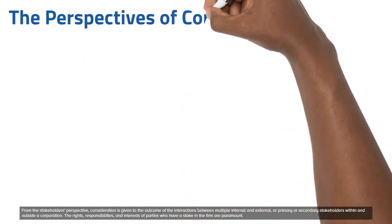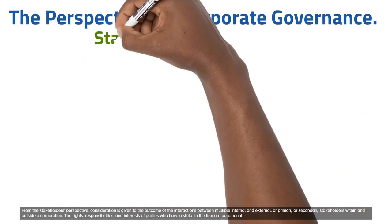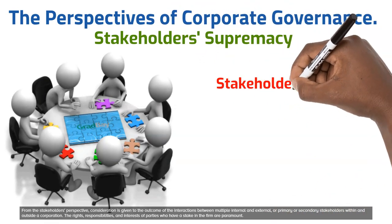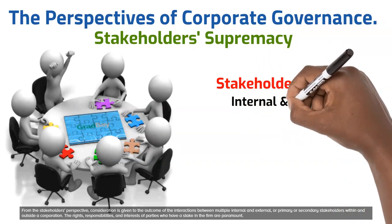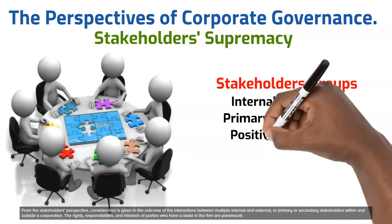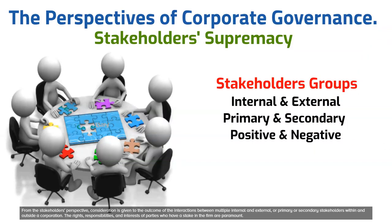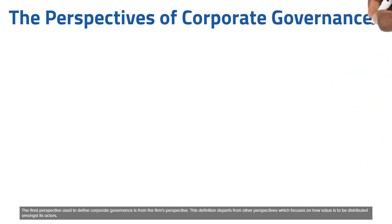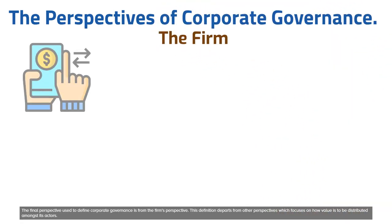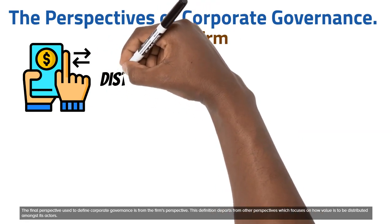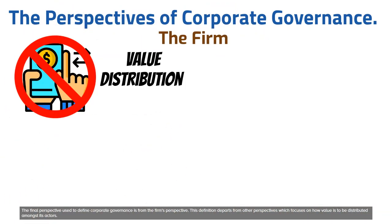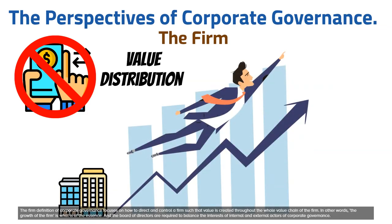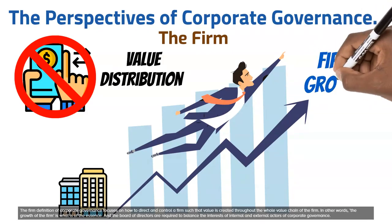From the stakeholder's perspective, consideration is given to the outcome of the interactions between multiple internal and external, or primary or secondary stakeholders within and outside a corporation. The rights, responsibilities, and interests of parties who have a stake in the firm are paramount. The final perspective used to define corporate governance is from the firm's perspective. This definition departs from other perspectives which focus on how value is to be distributed amongst its actors.